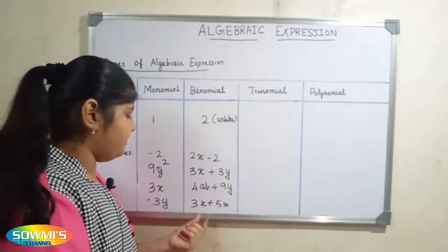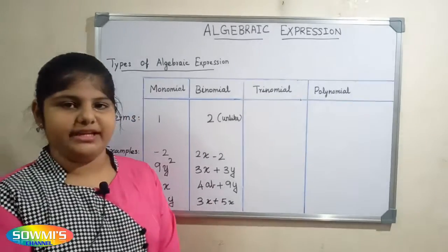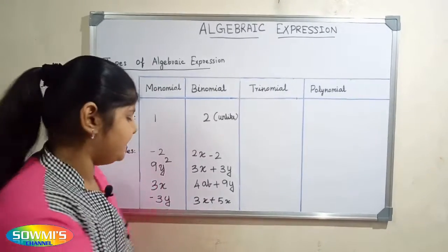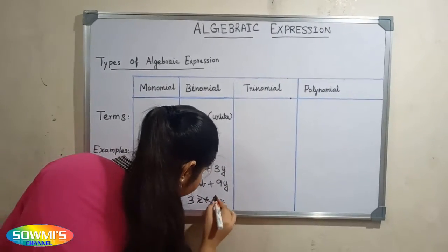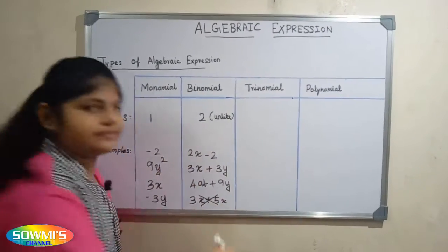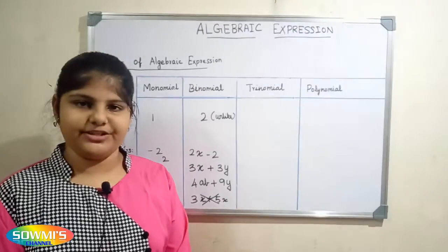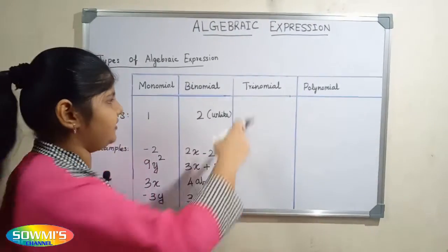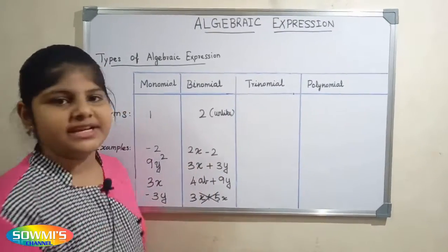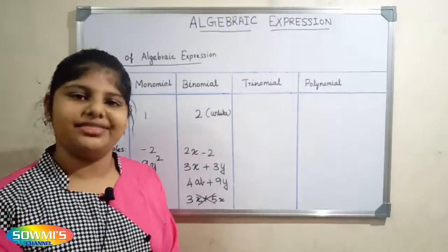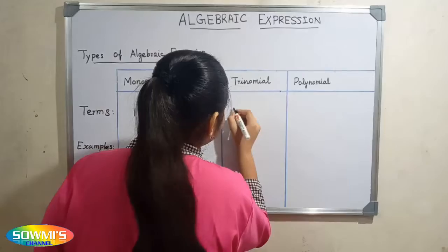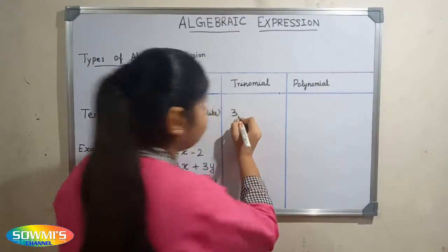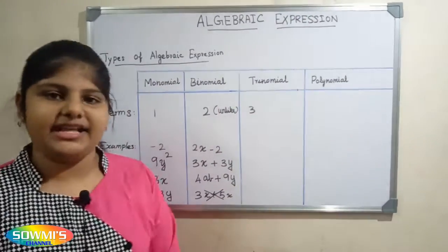You can see this example: 3x plus yx — this is not an example of a binomial because it is a like term. Next we will talk about trinomial.